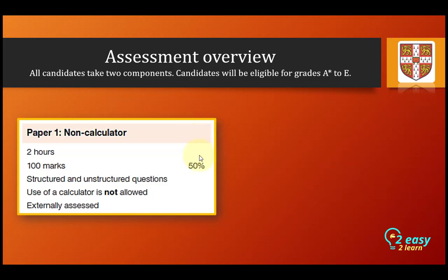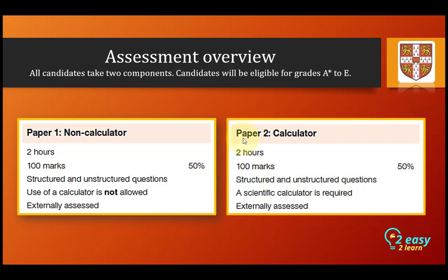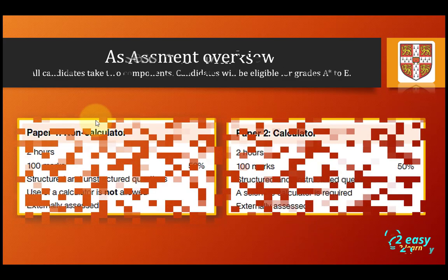The weightage of Paper 1 is 50%. Paper 2 is the calculator version — a scientific calculator is required. It is also a two-hour paper with 100 marks. Structured and unstructured questions will be assessed externally, and its weightage is also 50%.